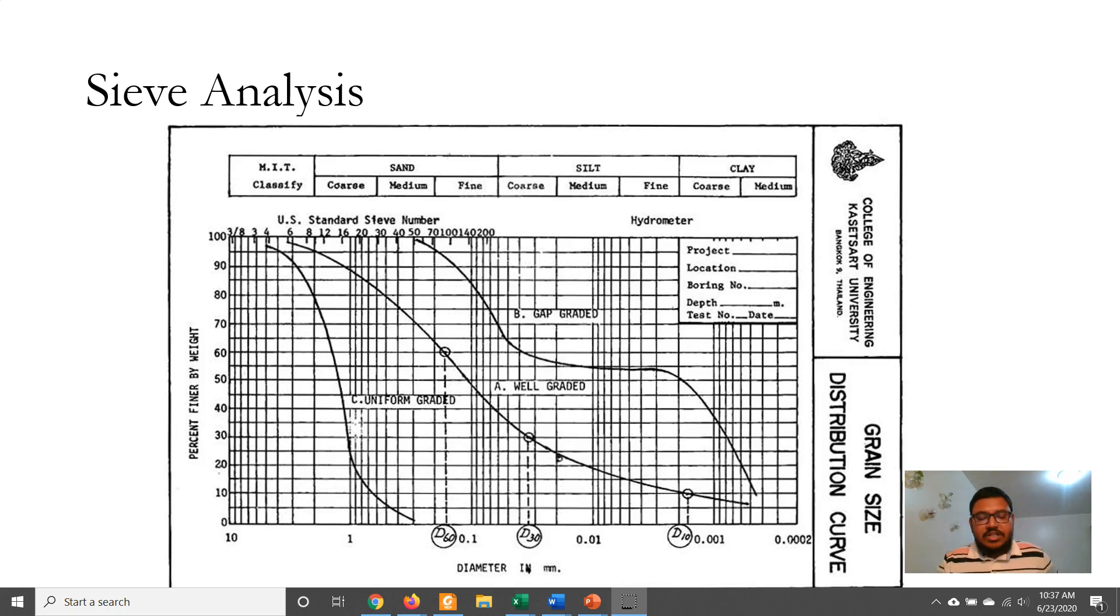From the shape of the gradation curve, an approximate idea of soil distribution can be obtained. If the curve is stretched over a wide range, then it is a well graded soil.